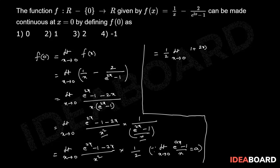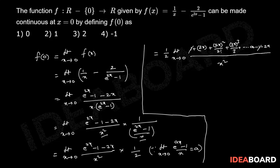Using the expansion e^(2x) = 1 + 2x + (2x)²/2! + (2x)³/3! + ... , substituting into the numerator: (1 + 2x + (2x)²/2! + (2x)³/3! + ... - 1 - 2x). The -1 and +1 cancel, and the 2x terms cancel, leaving higher order terms.